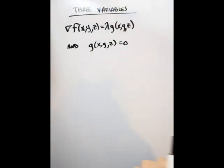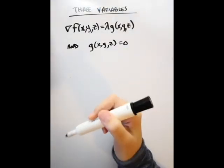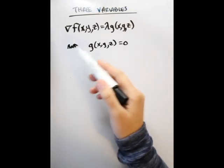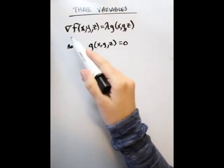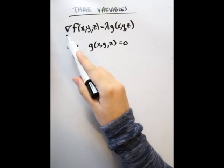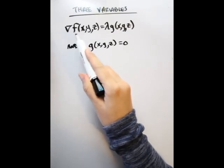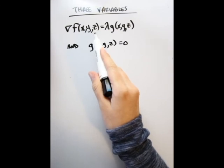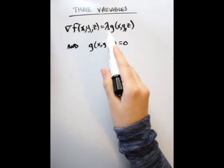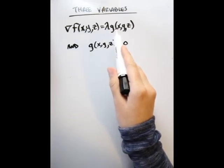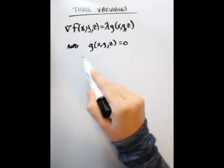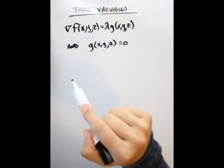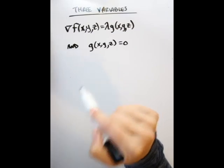The last thing to mention is that if your object function is a function of three variables, it's the same idea, just extended into three variables. You have the gradient of your function in terms of x, y, and z equal to a scalar multiple of your constraint function, which is also a function of x, y, and z. And the constraint function equaling zero is also one of your equations.